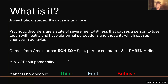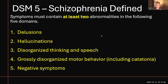We need to make note that it is not a split personality disorder. Schizophrenia is not split personality. It affects how people think, feel, and behave. There are five domains that need to be considered when diagnosing schizophrenia: delusions, hallucinations, disorganized thinking and speech, grossly disorganized motor behavior including catatonia, and negative symptoms. Somebody needs to have at least two abnormalities in the following five domains.